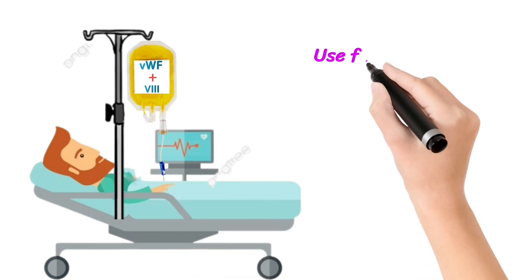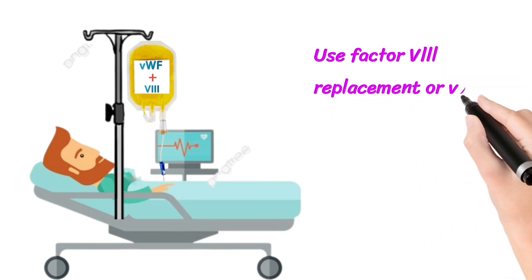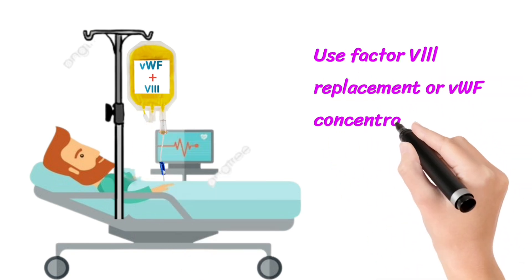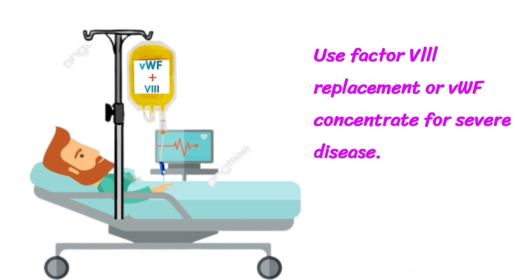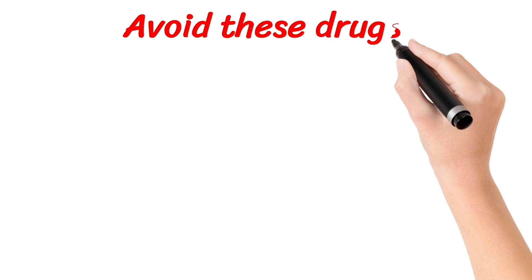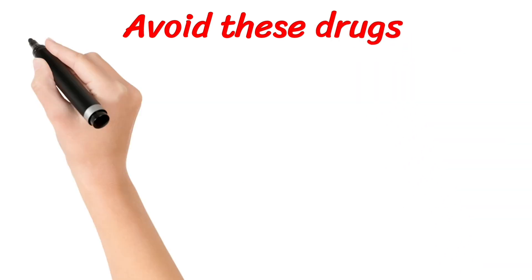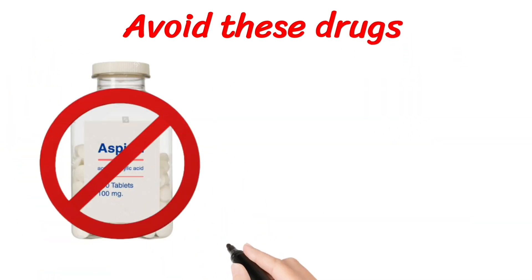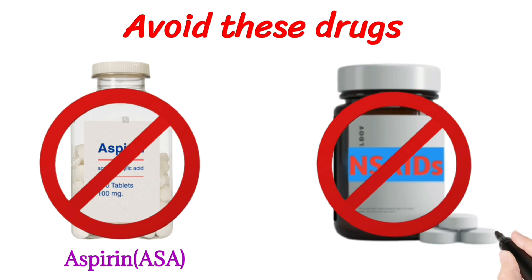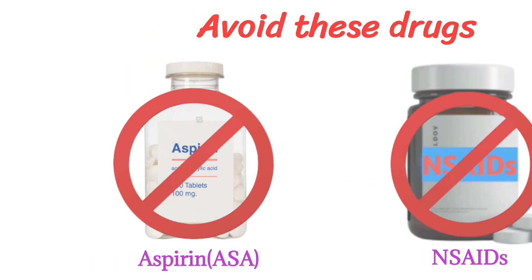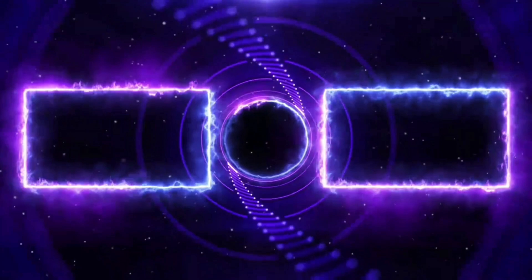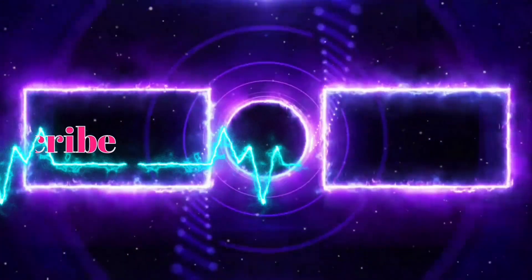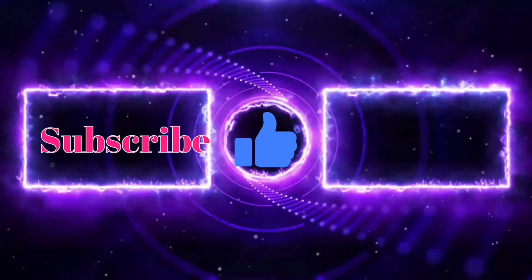For severe disease, Factor 8 replacement or von Willebrand factor concentrate is used. Drugs to avoid include aspirin and non-steroidal anti-inflammatory drugs. Thanks for watching — if you like the video, please subscribe and press the bell icon.